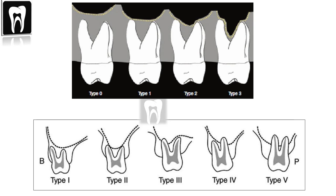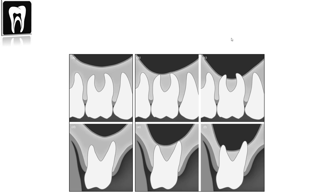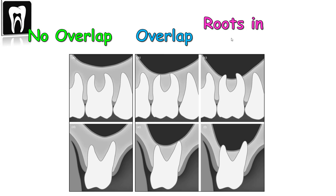In radiographic appearance, there are different classifications of vertical relationships between the maxillary molar roots and the maxillary sinus. We are concerned with three broad categories: no overlap, overlap, and roots in the sinus. Let's go into the details of these three categories.